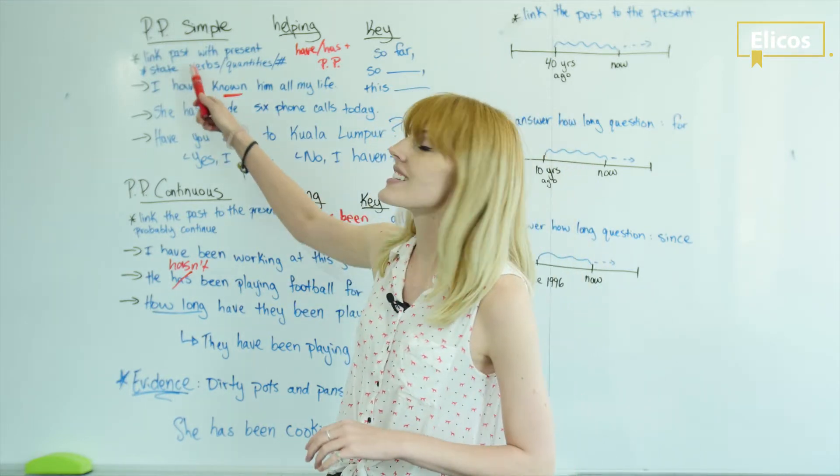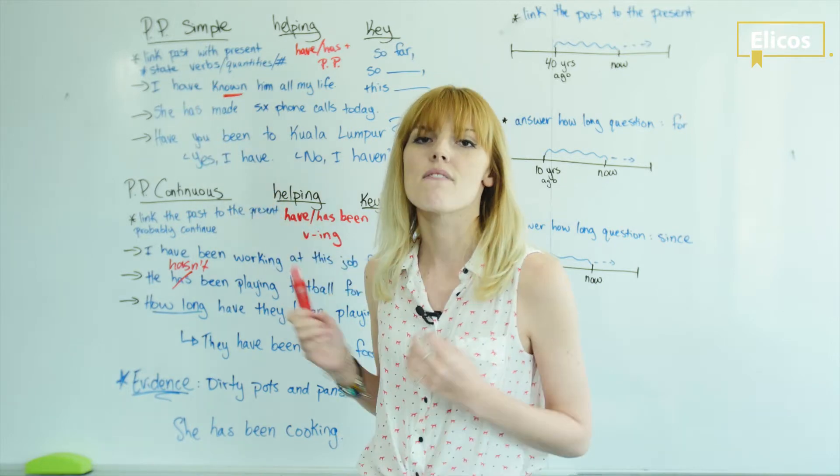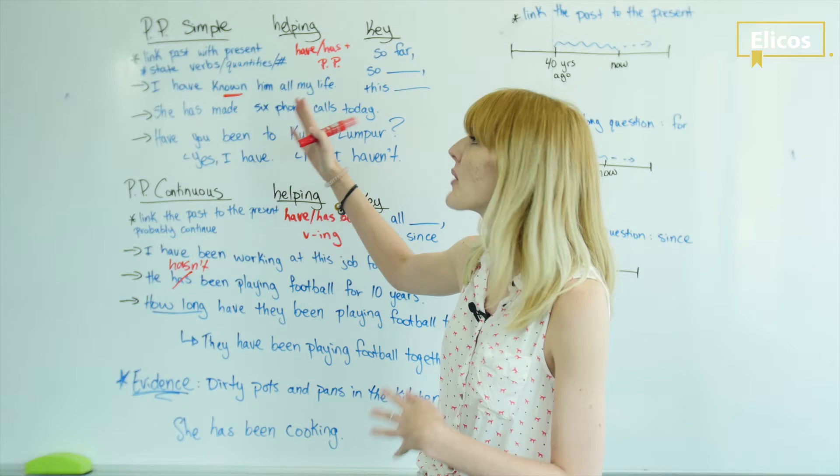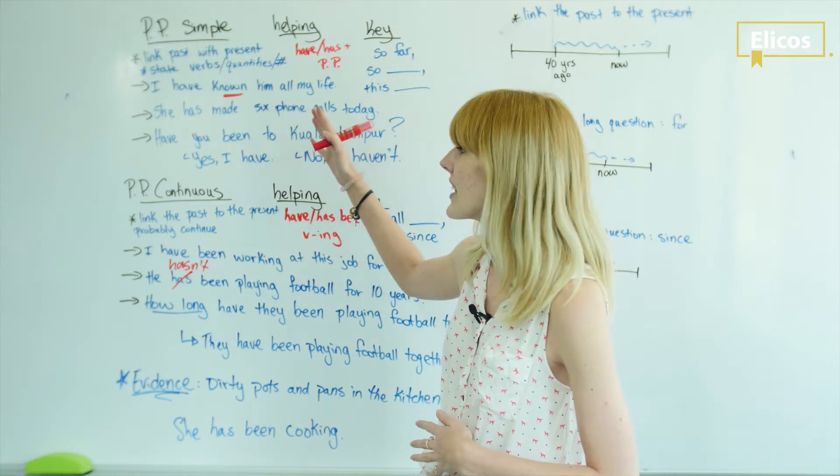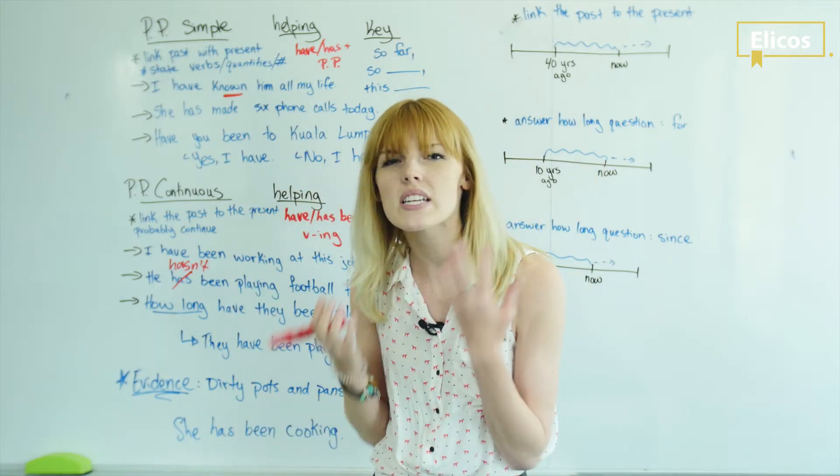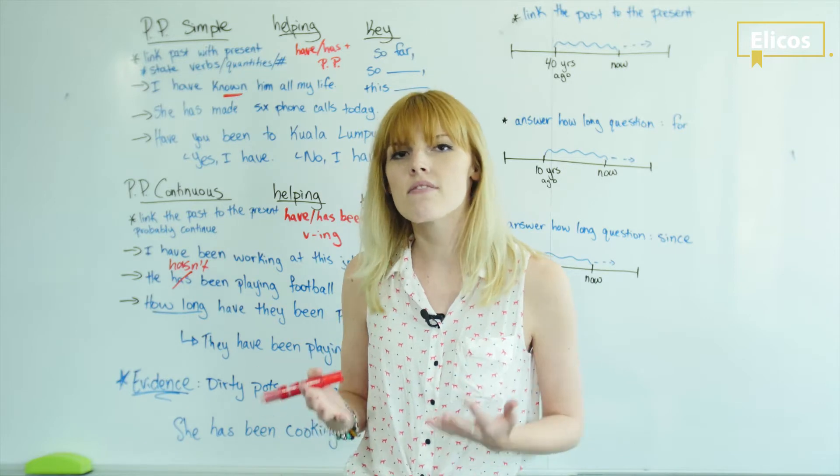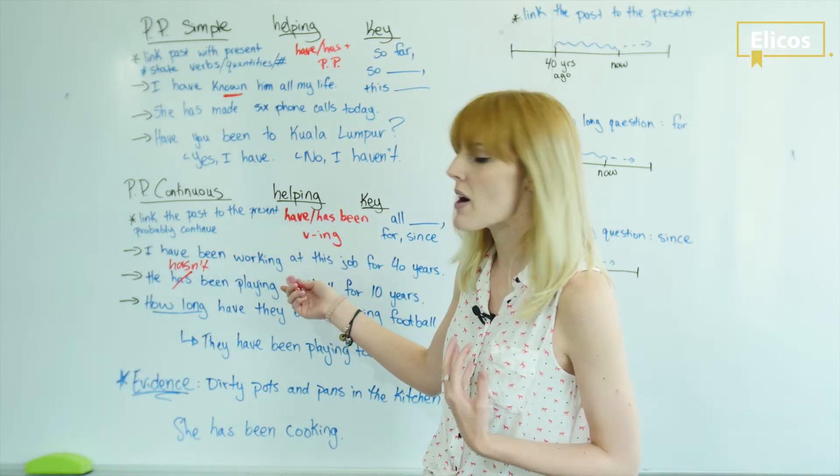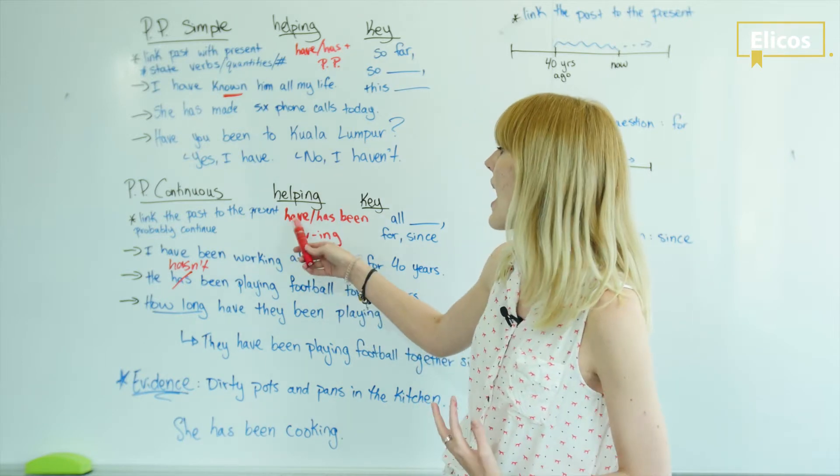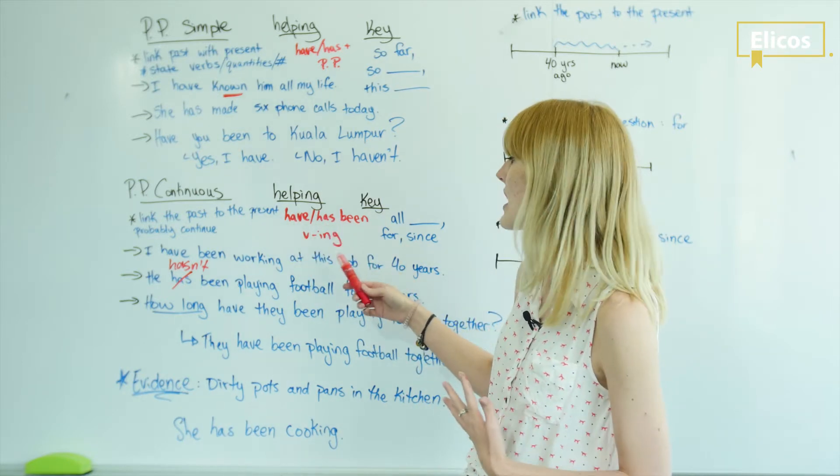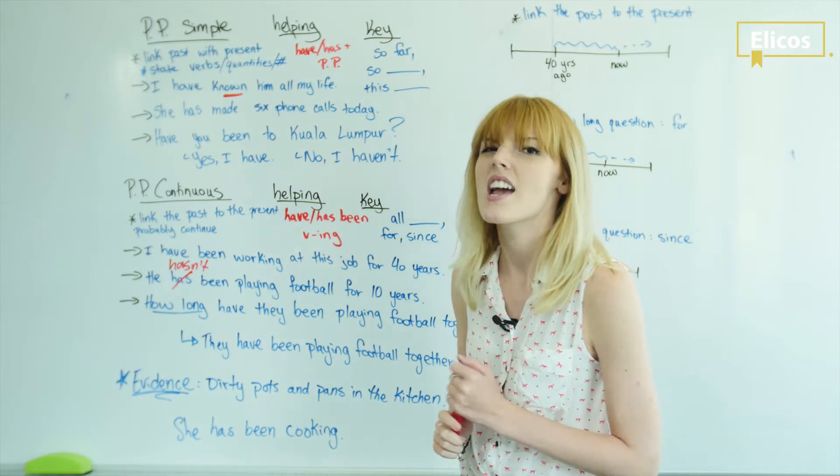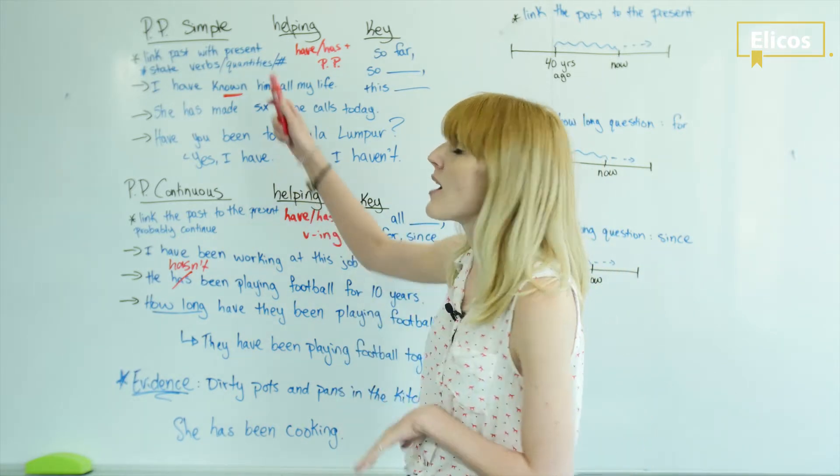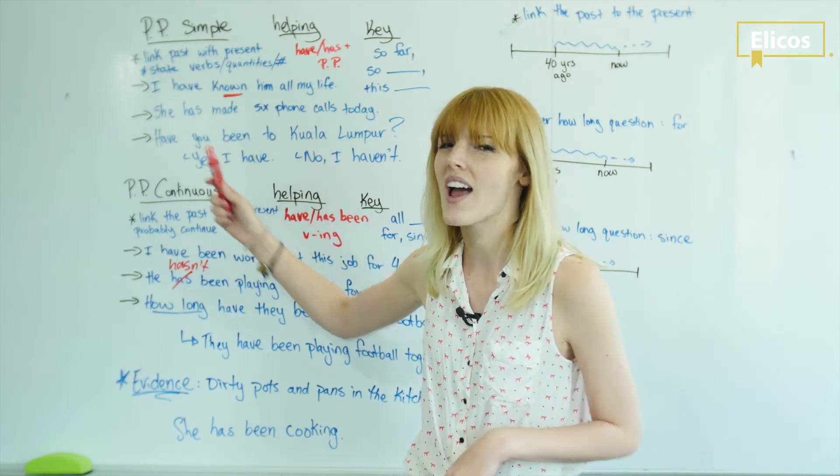So again, some important things to remember: if it is a state verb, a fact, we use the present perfect simple. If it's continuous, if we see evidence of it, or we want to use it with the verb-ing, here we go: have or has plus been and verb-ing. Keep quantity and numbers and state verbs up in the simple.